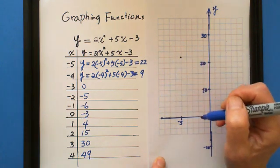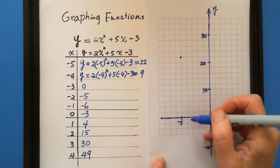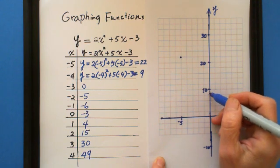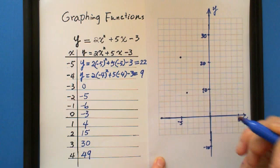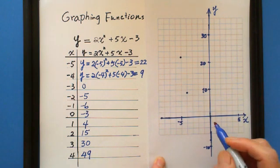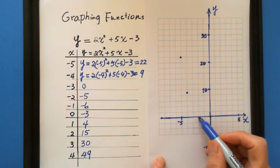This is 20, 22. And negative 4 is 9. Negative 4 is 9. Here is 8. This is 9. Negative 3 is 0. Negative 3 here is 0.